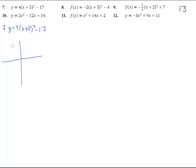So here we have x squared and it got moved that way 5, times 4 times as tall, so it's very narrow, and then went down 17. So it'll be back here at negative 5, down 17, and very, very tall.